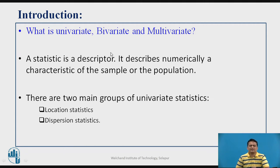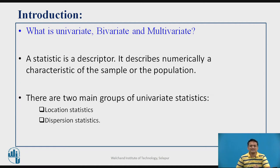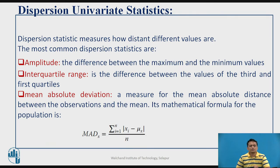All these analyses can be done using three different approaches. The first approach is frequency calculations, the second is visualization of these attributes, and the third is coming up with some statistical descriptors. When analyzing univariate data, the statistical descriptor can be of two kinds: a location statistic descriptor or a dispersion statistic descriptor. Today we will be talking about different dispersion univariate statistic parameters.